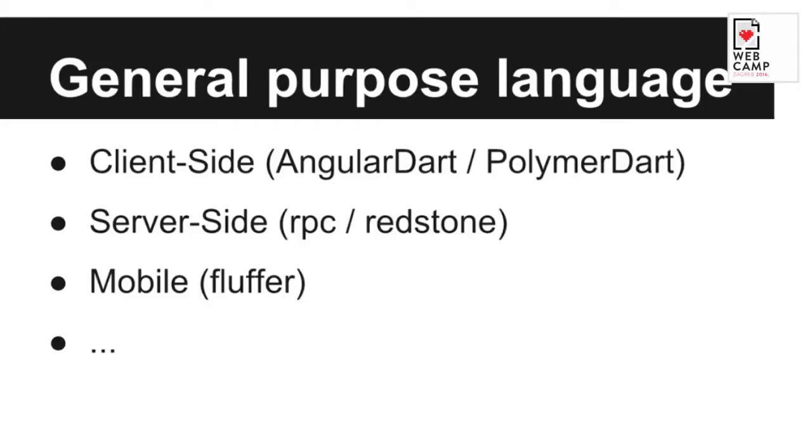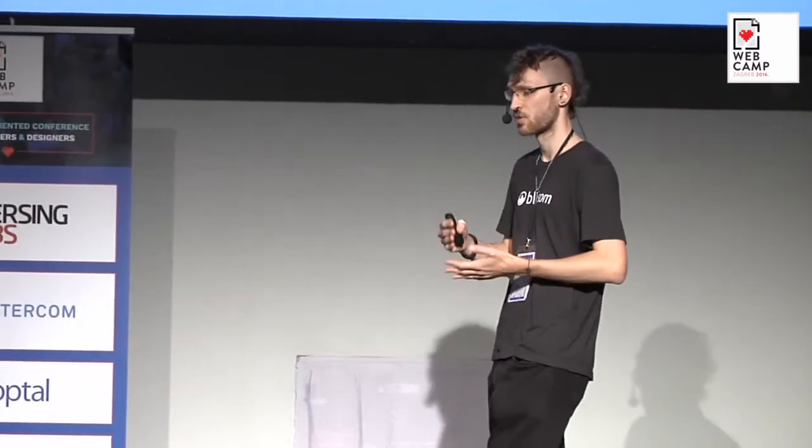Dart is a general purpose language. You can use it as a JavaScript replacement or enhancement alongside your other JavaScript libraries. For example, you can use AngularDart or PolymerDart — ports of those frameworks to Dart — or frameworks developed specifically for Dart. On the server side, you can use frameworks like RPC or Redstone, which is pretty much like Ruby on Rails for Dart.